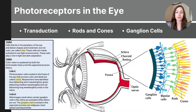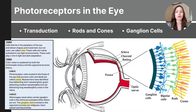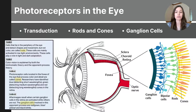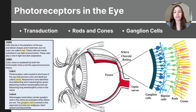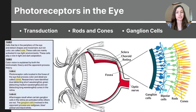Photoreceptors are found in the retina, which is a very light-sensitive tissue in the back of the eye. The retina is where light is converted into electrical signals through cells called rods and cones. Light travels all the way to the back of the retina and is converted into electrical signals. That electrical impulse travels from the rods and cones to the bipolar cells, to the ganglion cells, and then to the optic nerve, which travels to the brain.